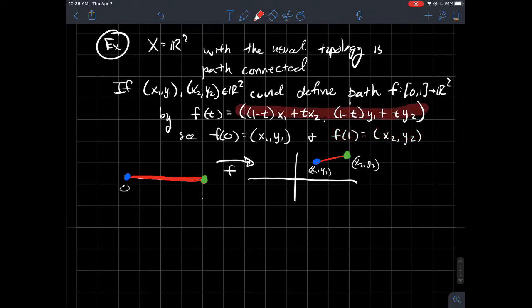So again, this is just another way to talk about this line segment that connects these two points. So because I could do that for any two points I picked in the plane, the plane is path-connected.